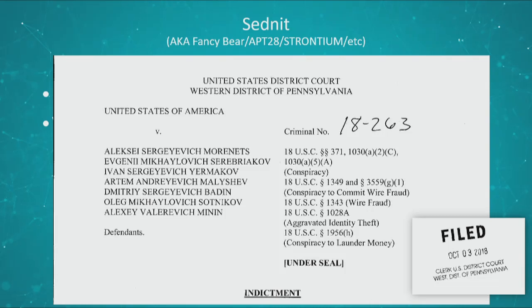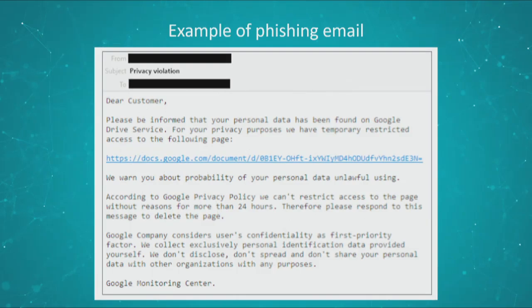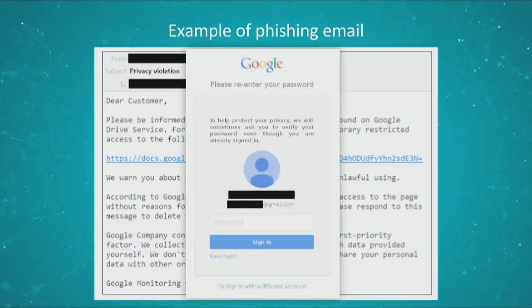As the last step, I just want to show you how they are operating. They usually use emails. This is an example of a phishing email they would send to targets. The email says that your personal data has been found on Google, and there's a link that, if you click it, you're not redirected to the real Google server — you're in fact redirected to a page owned by the Sednit group. If the user goes ahead and enters their credentials, those will be exfiltrated to the Sednit operators.